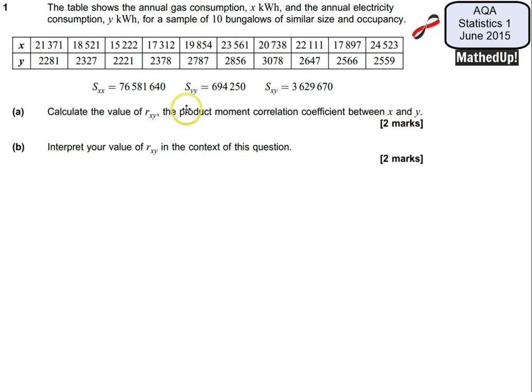To use the summarized data we need to use this formula that's actually given to you in your formula book. We've got r, our product moment correlation coefficient is going to be equal to sxy divided by the square root of sxx times syy. So we've got these values here, it's just a case of plugging this into a calculation.